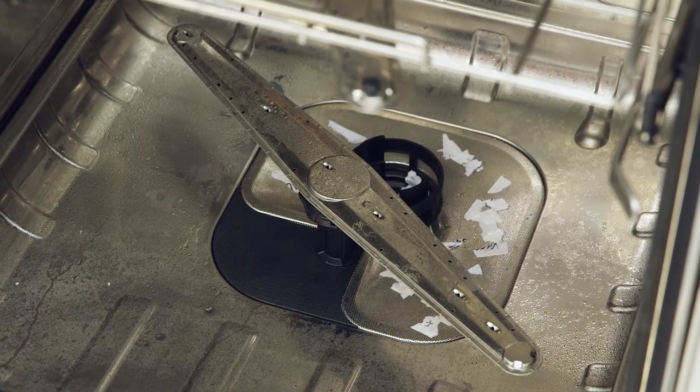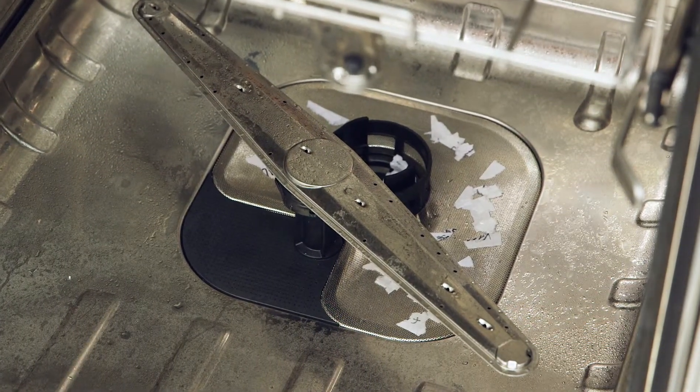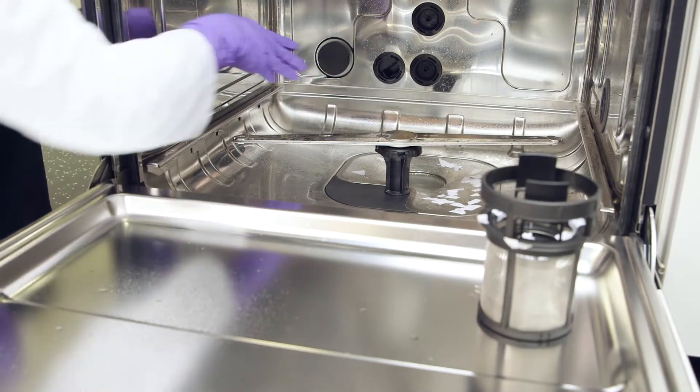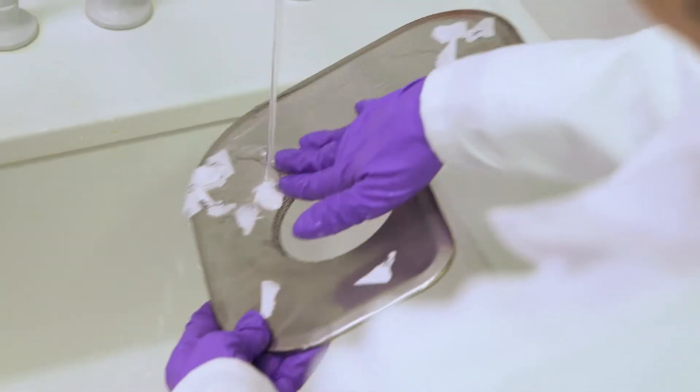As a result, labels are deposited inside the machine, for example in the sieve. All label residues should be removed before the machine cools down. In this way, you can avoid stubborn adhesions.